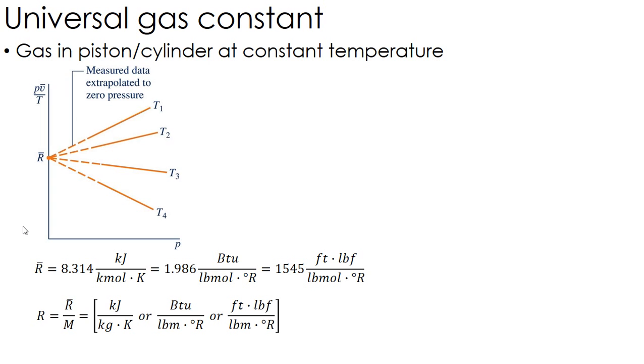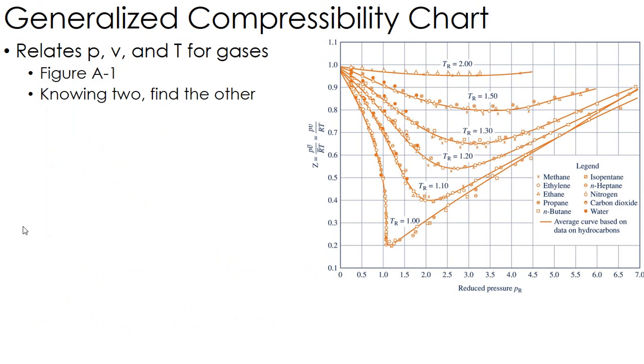Now, we're going to use that quite often as we move forward. The first thing that we're going to talk about is this idea of a generalized compressibility chart. And we're going to quickly take this and move into what we call the ideal gas model. But for now, we're going to start with this compressibility chart. And what this does is it relates pressure, volume, and temperature for gases.